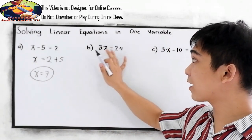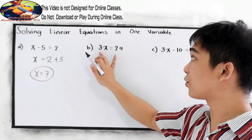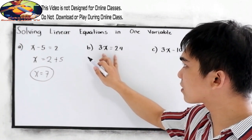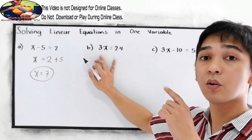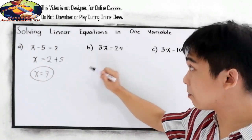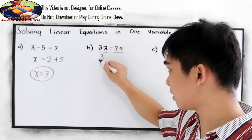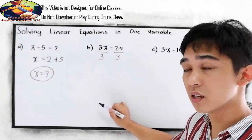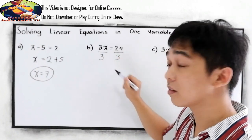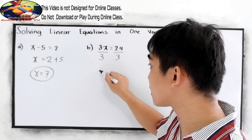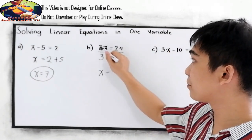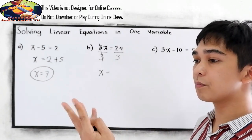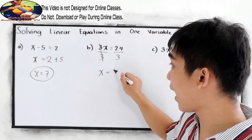Letter B: 3x is equal to 24. To find x, we can multiply the equation by one-third, or simply divide the equation by 3, because we want the value for x only. So 3x divided by 3 gives us 1x, or simply x. Now 24 divided by 3 gives us x is equal to 8.